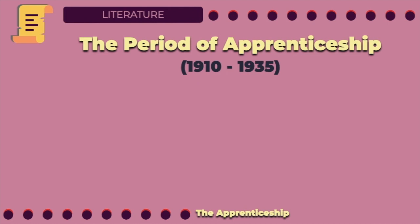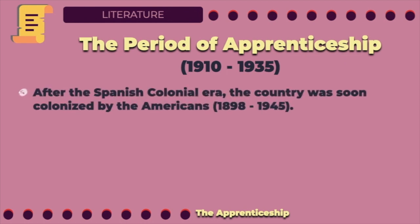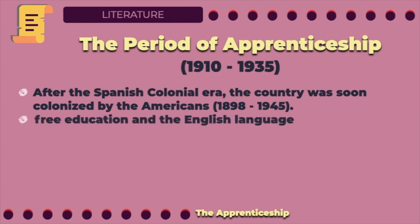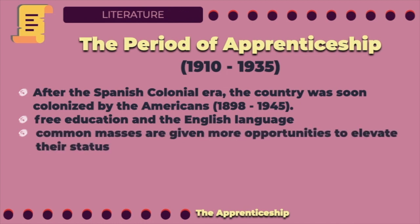Let's first learn about the history of the Philippines during the period of apprenticeship. After the Spanish colonial era, the country was soon colonized by the Americans, from 1898 to 1945. The period of apprenticeship in Philippine literature was largely influenced by two significant heritages the Filipinos acquired from the Americans: free education, and the English language, which became the official medium of instruction in public schools. The Filipinos during the American period were given proper education and were encouraged to be more participative in the American government and society through the use of the English language.